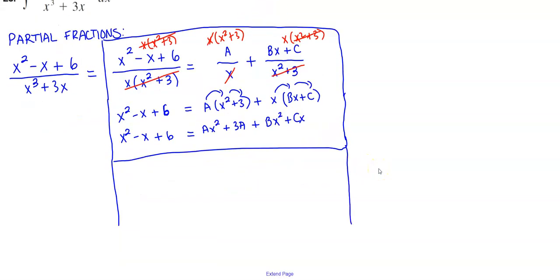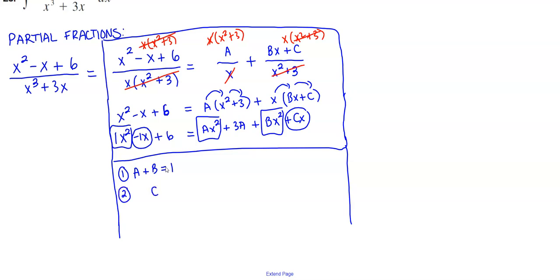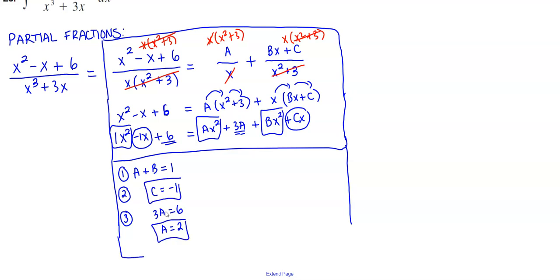Now we write our system of equations. The coefficient of x squared on the left is 1, and on the right we have a plus b, so equation 1 is a plus b equals 1. For the x coefficient, we see that c equals negative 1. For the constant term, 3a equals 6, which means a equals 2.